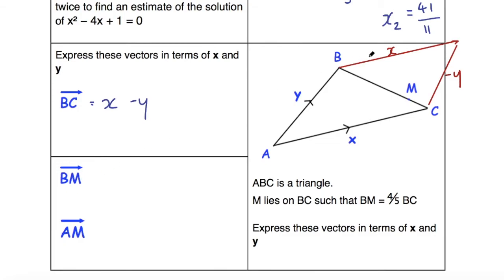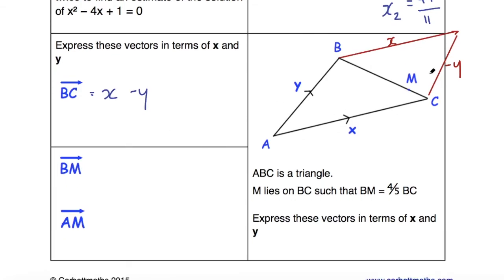And then we need BM in terms of x and y. Well, we're told that M is 4/5 BC, so we could say that's 4/5 of (x - y). Remember that BC was x - y, so I've just written that in terms of x - y, and then expand those brackets out so we get (4/5)x - (4/5)y.